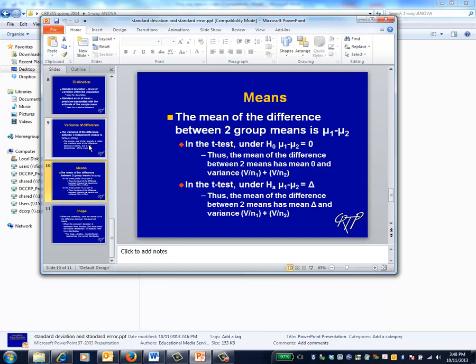To summarize, for the t-test, the signal is the difference between the observed means. Under the null hypothesis that there is no difference between the means, the mean of the sampling distribution is zero, and the variance is s given on the slide. Under the alternative hypothesis, there is a difference between the means, labeled delta in this slide, but the variance remains the same.